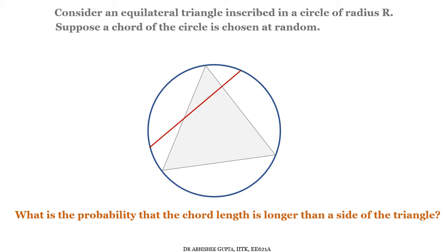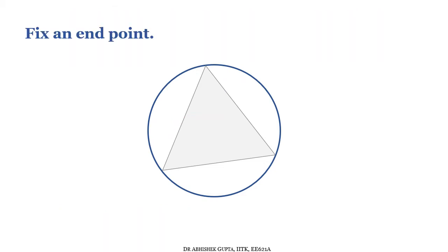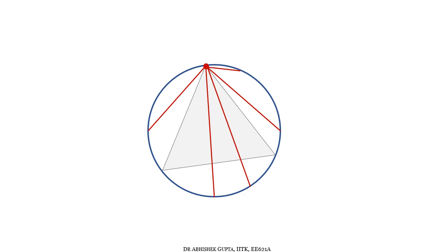To start, we will fix one endpoint — we will show later that the selection of this endpoint is not going to change the final probability. This endpoint can be taken at any corner of the triangle. Once we take this endpoint, we can draw many chords starting from it, and the other endpoint will be somewhere on the circle. If we draw a tangent at this point, we will see that each chord can be represented by an angle theta.